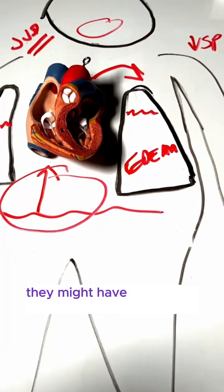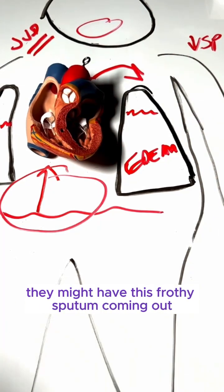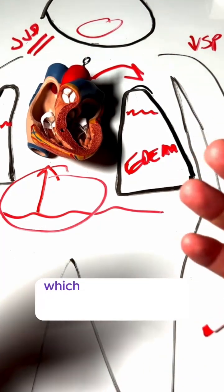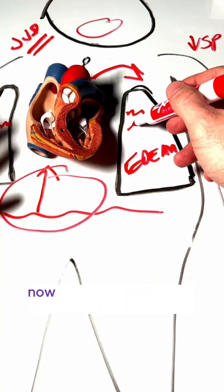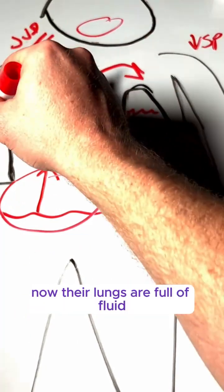When they cough, they might have this frothy sputum coming out. And they might also experience orthopnea, which is this difficulty breathing when they lie down. Now, their lungs are full of fluid. So imagine how difficult it would be to breathe when you lie down.